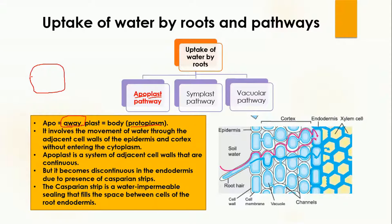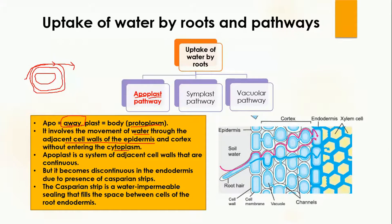Inside the plant cell, we have the cell wall, then the cell membrane, a large vacuole, and the cytoplasm fills the rest. The apoplast pathway means away from the protoplasm — in this pathway water moves away from the cytoplasm and nucleus and moves through the cell wall. It does not enter the cytoplasm or protoplasm, but moves outside through the cell wall from one cell to another.